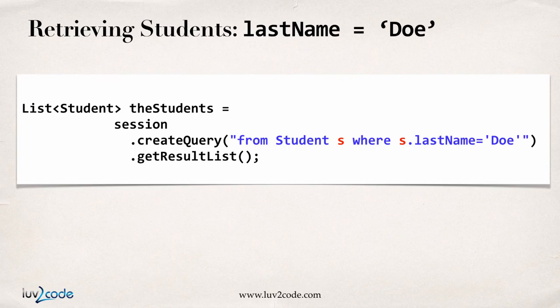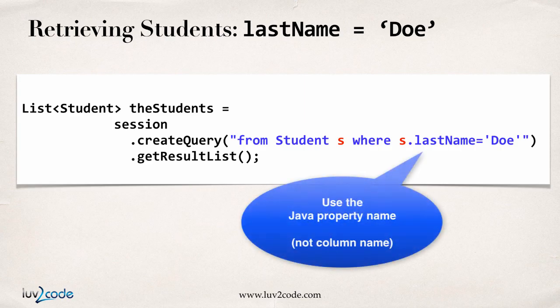You may also want to say you don't want all students — you only want students who have a specific last name, like Doe or Darby. Here you can say createQuery 'from student' and make use of an alias S, then add 'where S.lastName = Doe'. This will only give you students from the table where their last name is equal to Doe. Note that when you say .lastName, it's an object property, not the actual column name — you refer to everything using object notation.